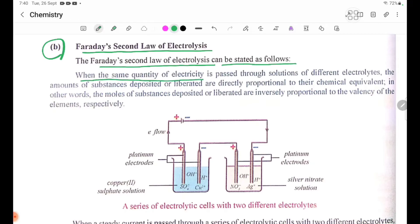When the same quantity of electricity is passed through solutions of different electrolytes, the amounts of substances deposited or liberated are directly proportional to their chemical equivalent. In other words, the moles of substances deposited or liberated are inversely proportional to their valences of the elements respectively.